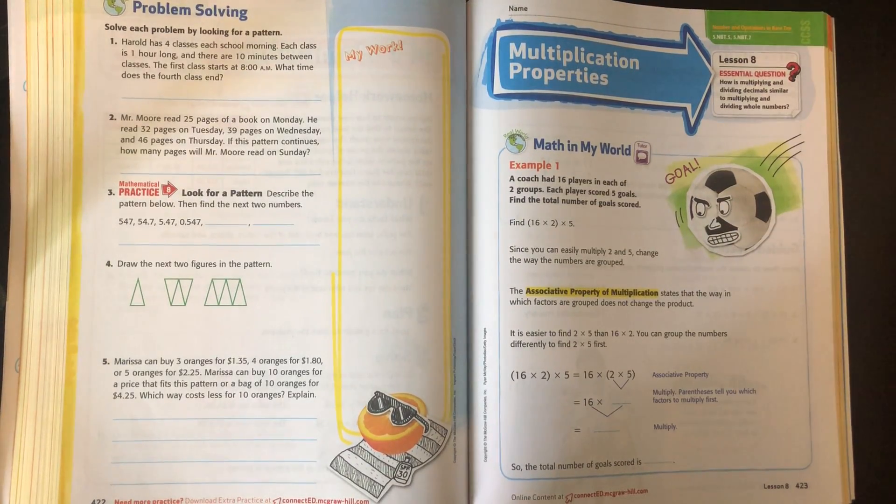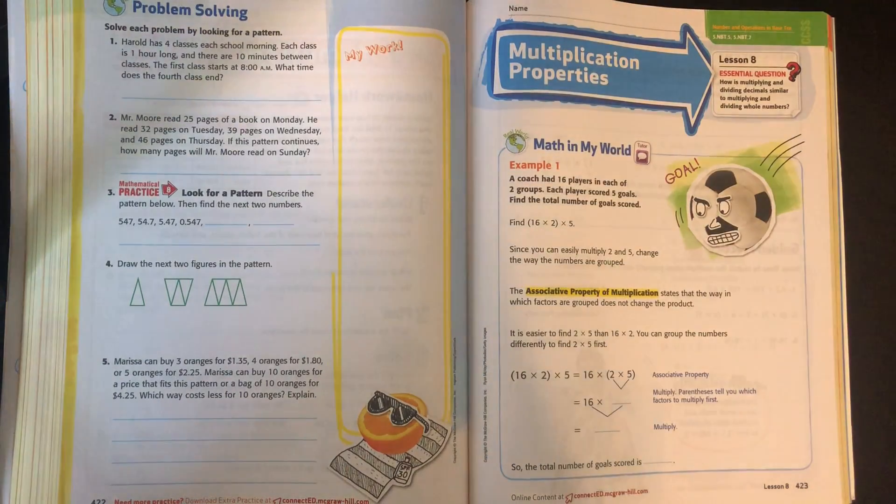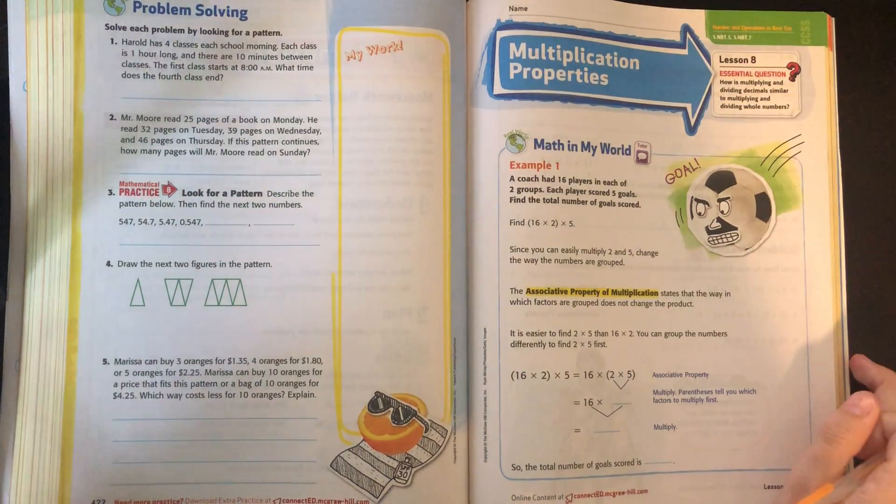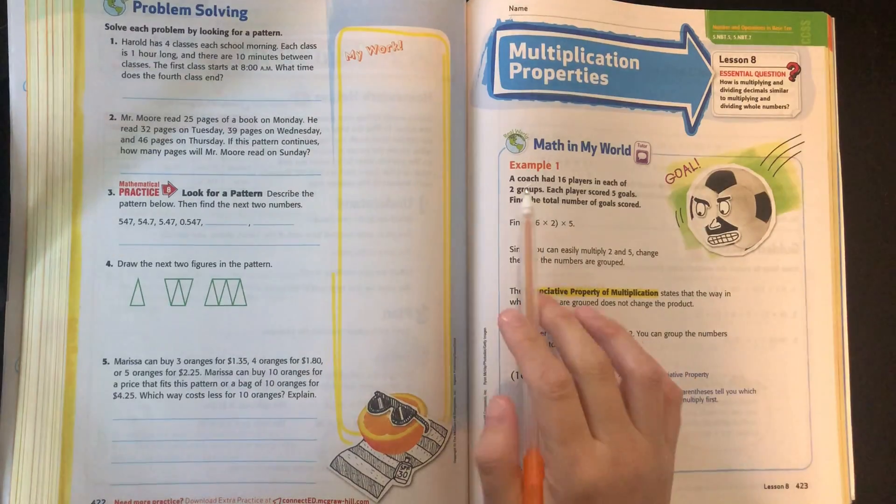Now, if you remember, we have done properties of addition, and the properties of multiplication are pretty much the same. So let's start with our example.